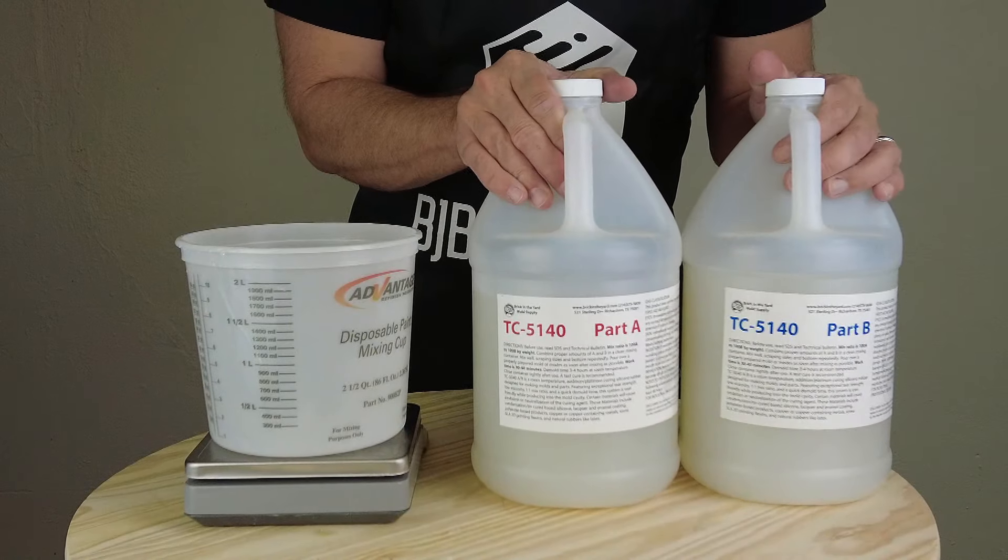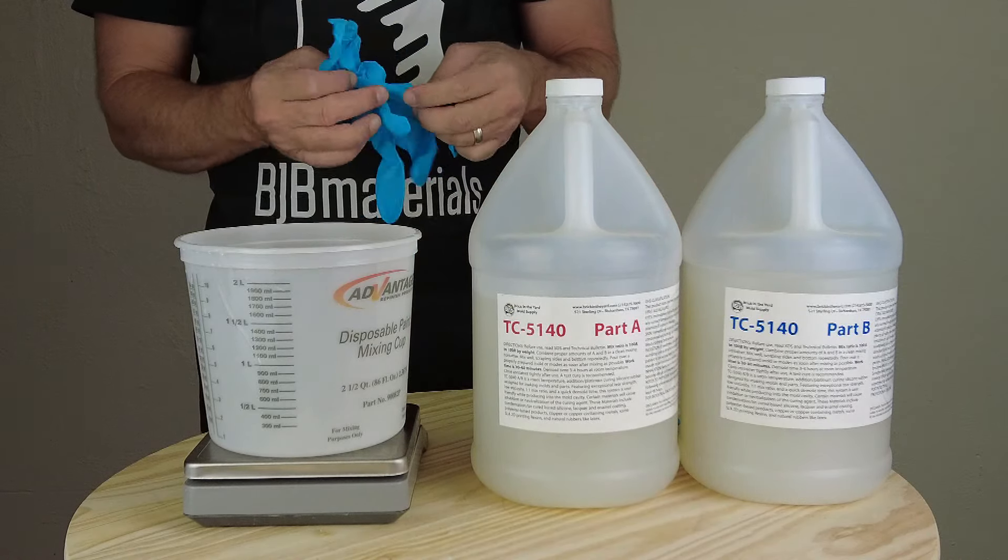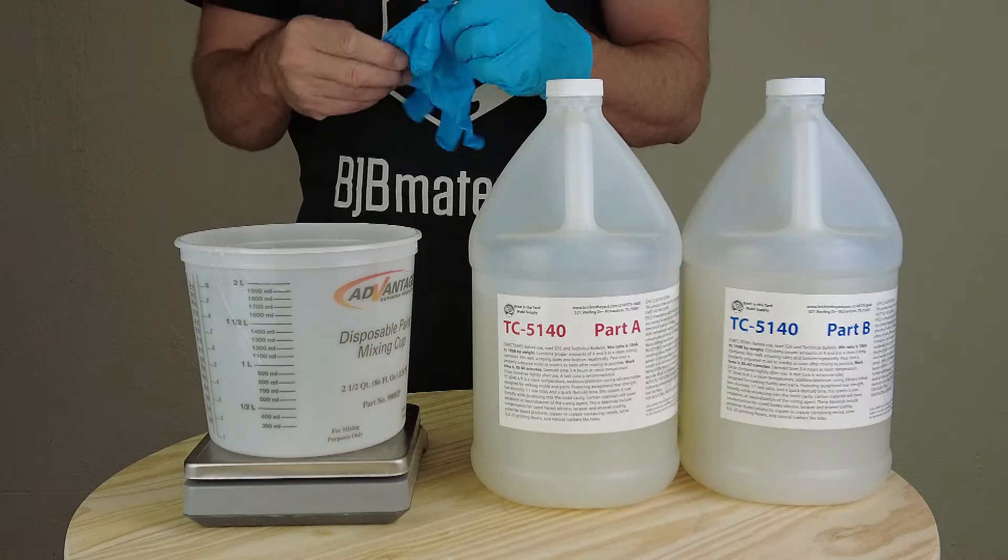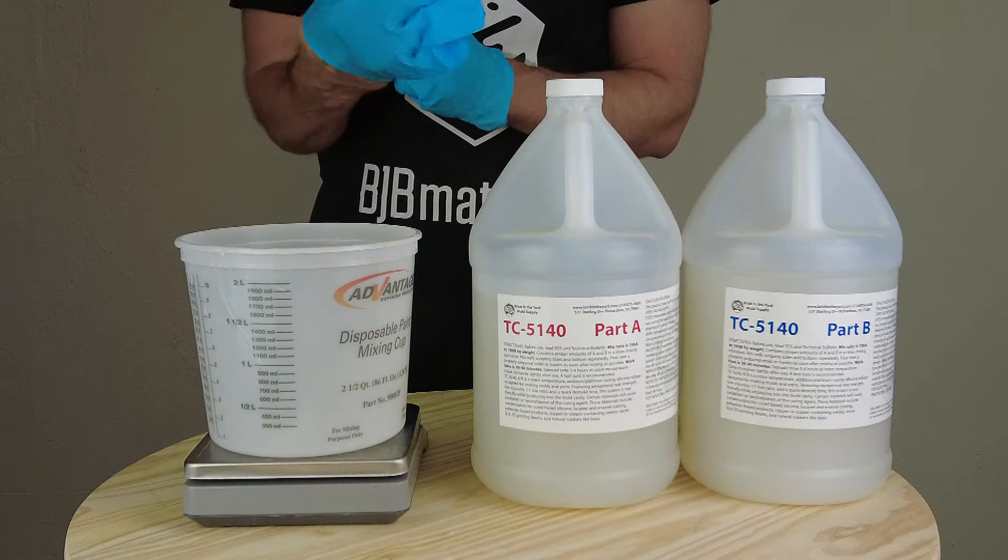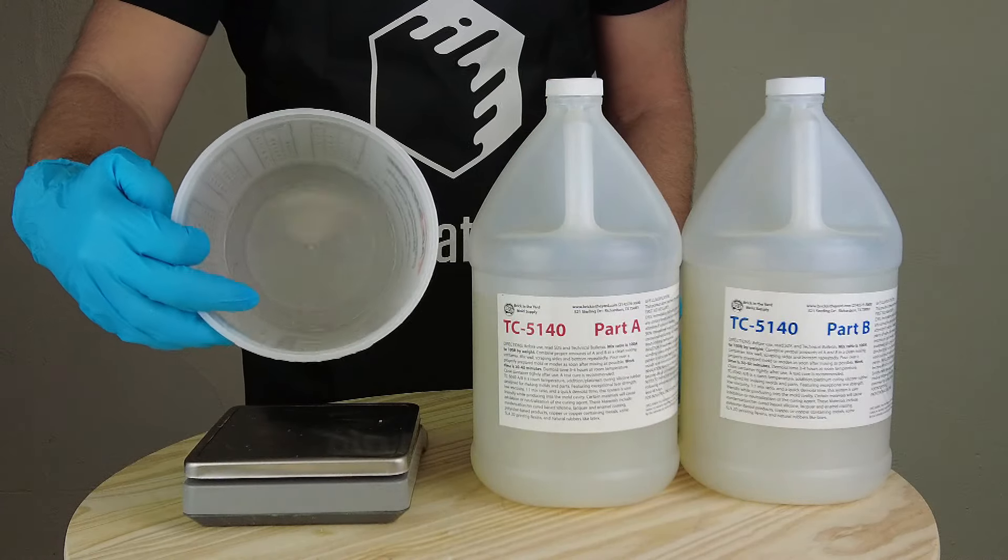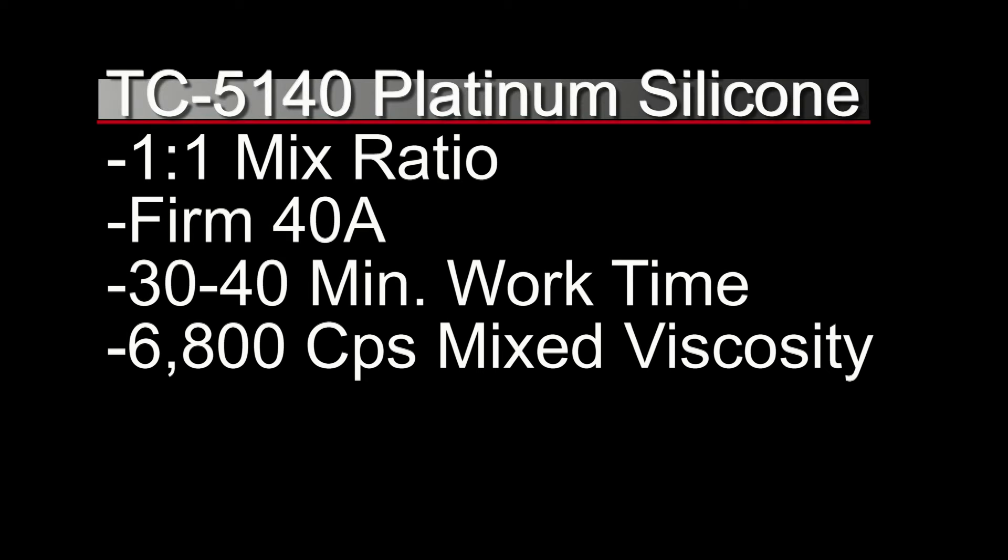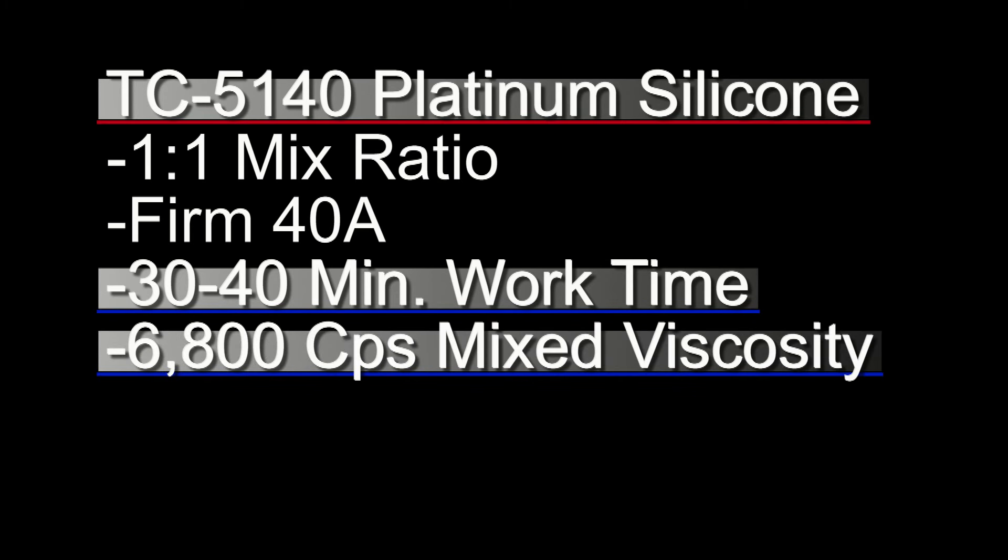Now for the sake of this video, I'm going to be pouring a couple of different molds with 5140 TC, 5140 Platinum Silicone. And 5140 is translucent, so we'll be able to see into the mold and see what's going on when we vacuum degas or we don't vacuum degas. And 5140 is a good general purpose silicone for multiple piece molds where they're going to go and key together and you don't want distortion at that seam. So nice firm silicone, one-to-one mix ratio, of course a 40 shore A, and it has a 30 to 40 minute working time and 6800 centipoise mixed viscosity.